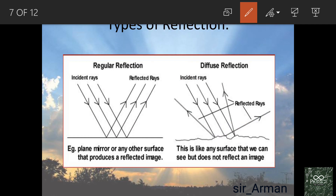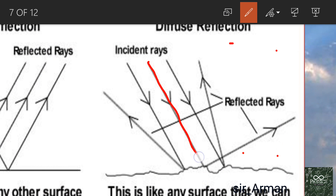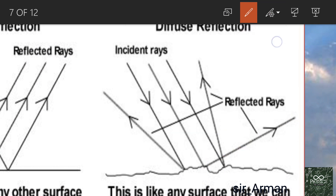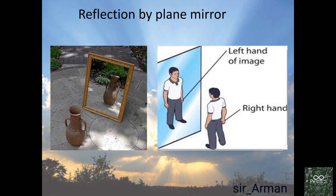Many students doubt that in diffused reflection the laws of reflection are not followed — but that is wrong. Whatever the kind of surface, the laws of reflection are always followed. You draw the normal at the point of incidence, and at every point the angle of incidence equals the angle of reflection.